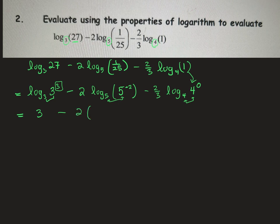And then we're going to replace log base 5 of 5 to the exponent of negative 2. Bases are both 5, so therefore it equals the exponent of negative 2. And then minus 2 thirds. And finally, log base 4 of 4. Bases are the same, so it equals the exponent of 0.